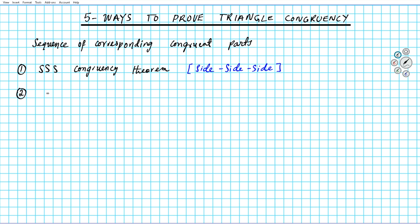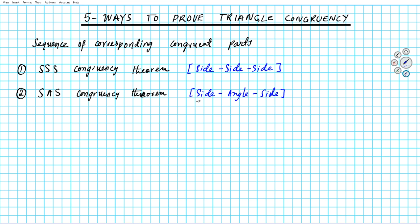The next way to prove congruency is the SAS congruency theorem, which stands for side angle side. Something to keep in mind here is that to use the SAS congruency theorem, the angle has to be included — the angle has to be between the two sides.